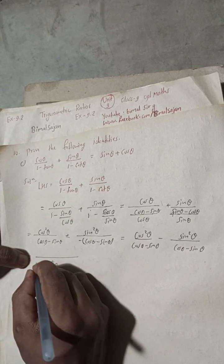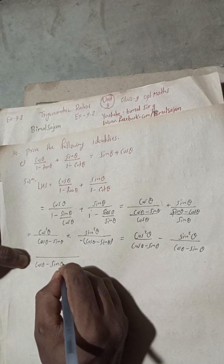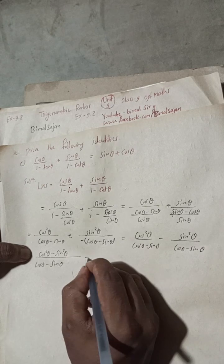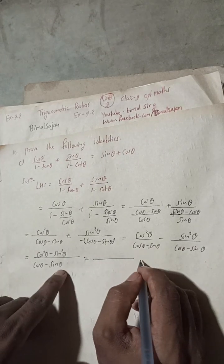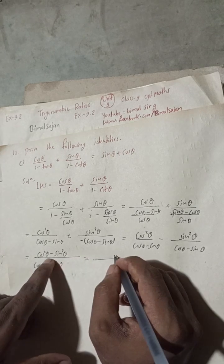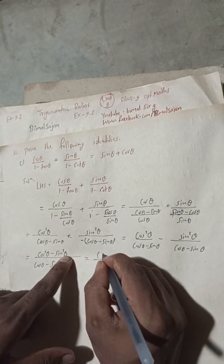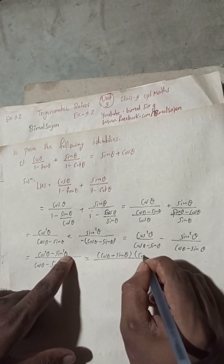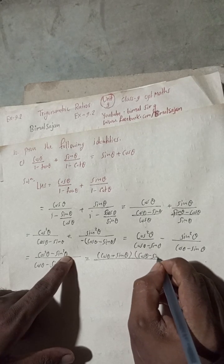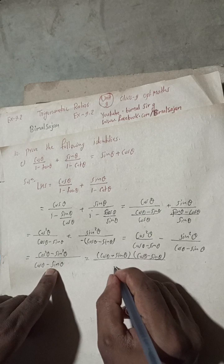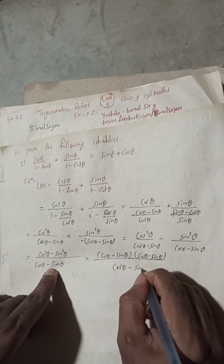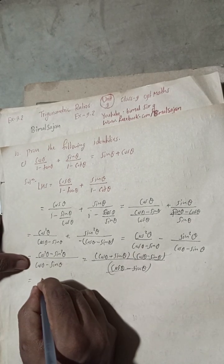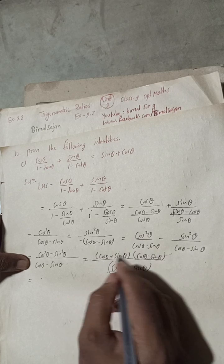So we can write here cos θ minus sin θ, and up top this is cos squared θ minus sin squared θ. Now applying the a squared minus b squared formula: that means cos θ plus sin θ into cos θ minus sin θ, and this cos θ minus sin θ cancels. So we get cos θ plus sin θ.